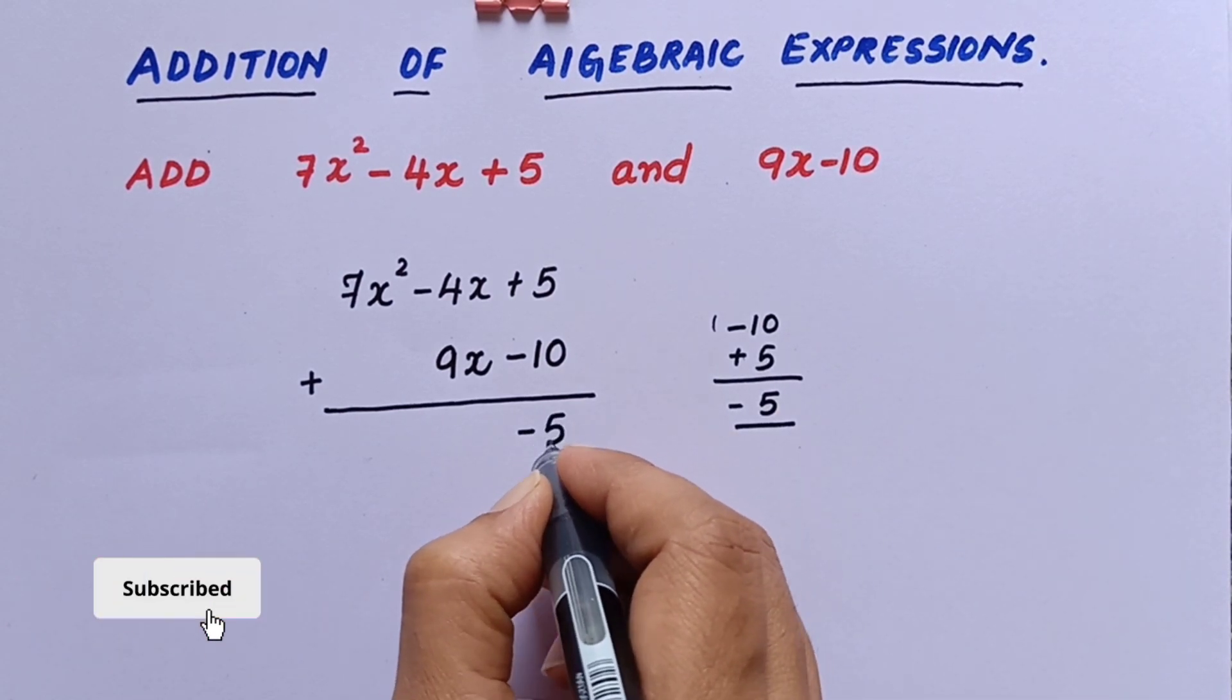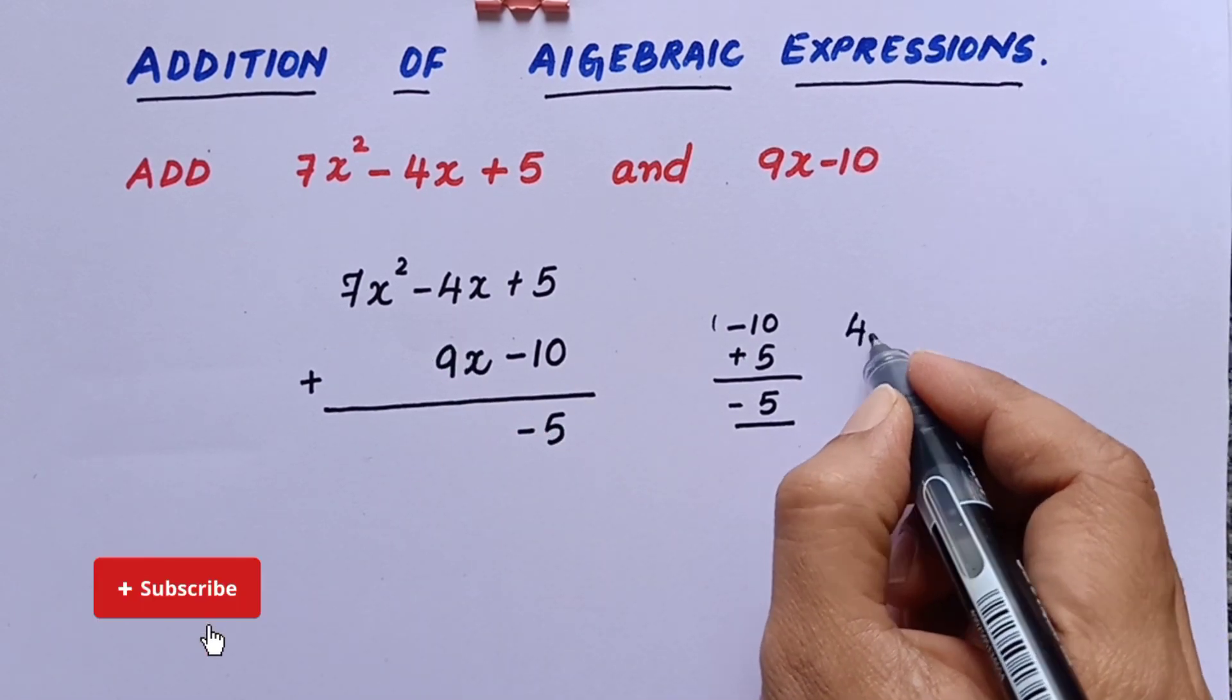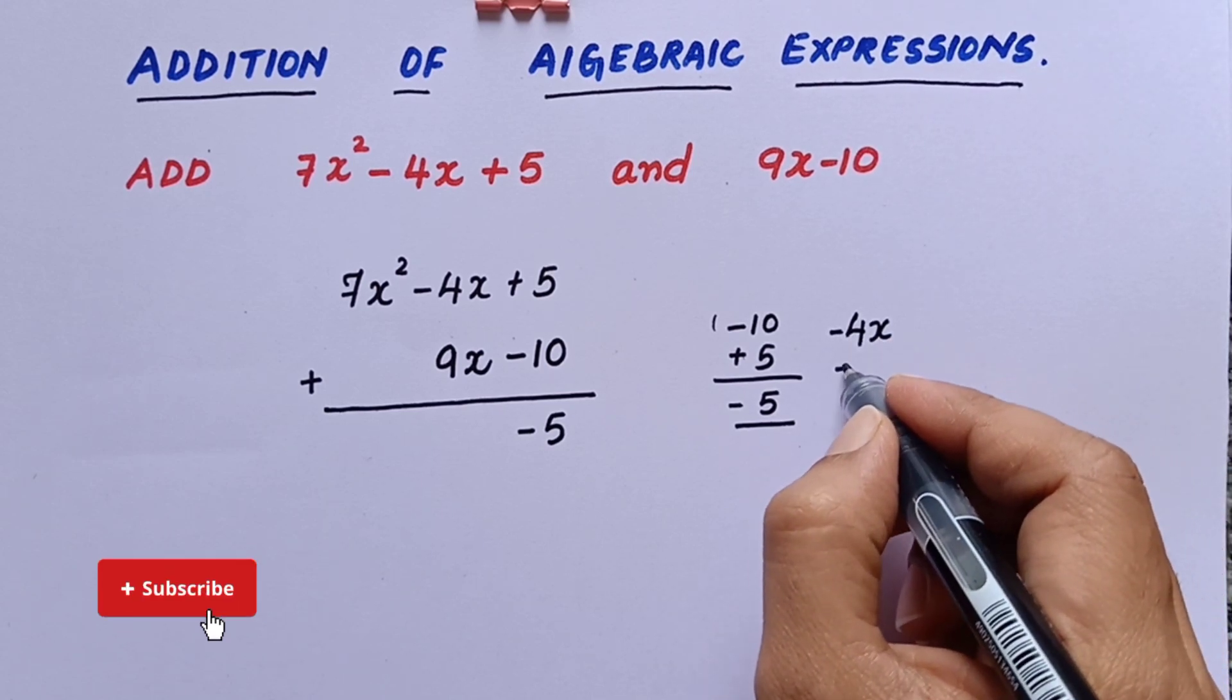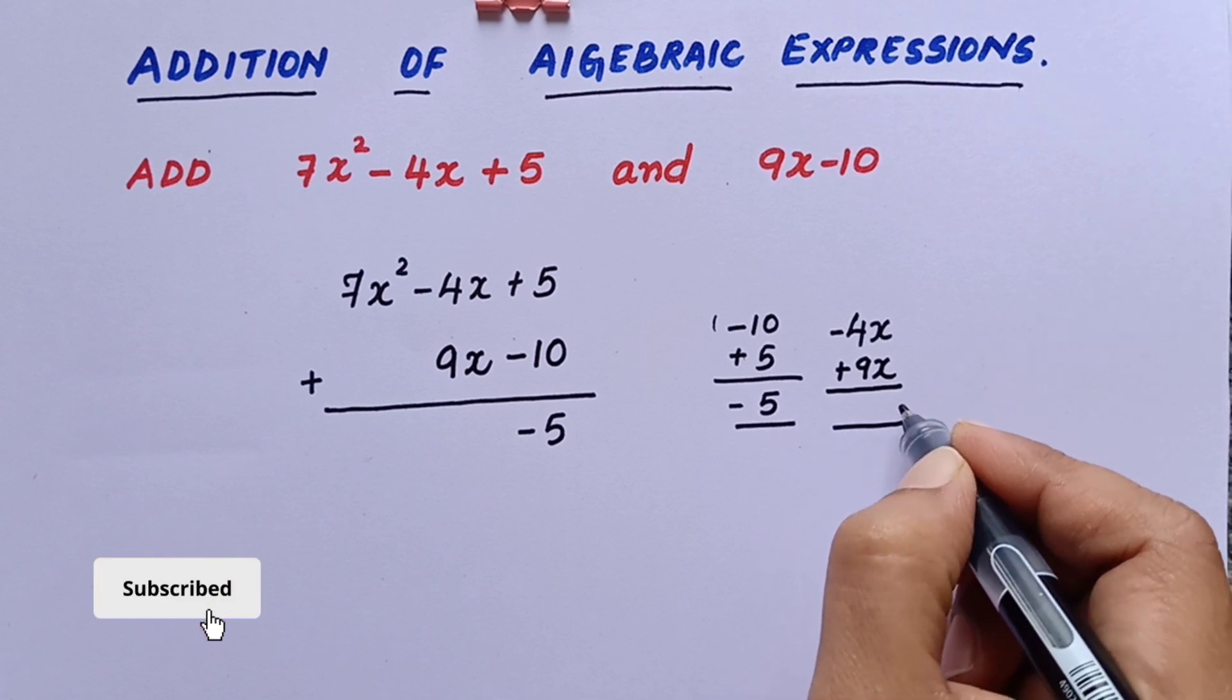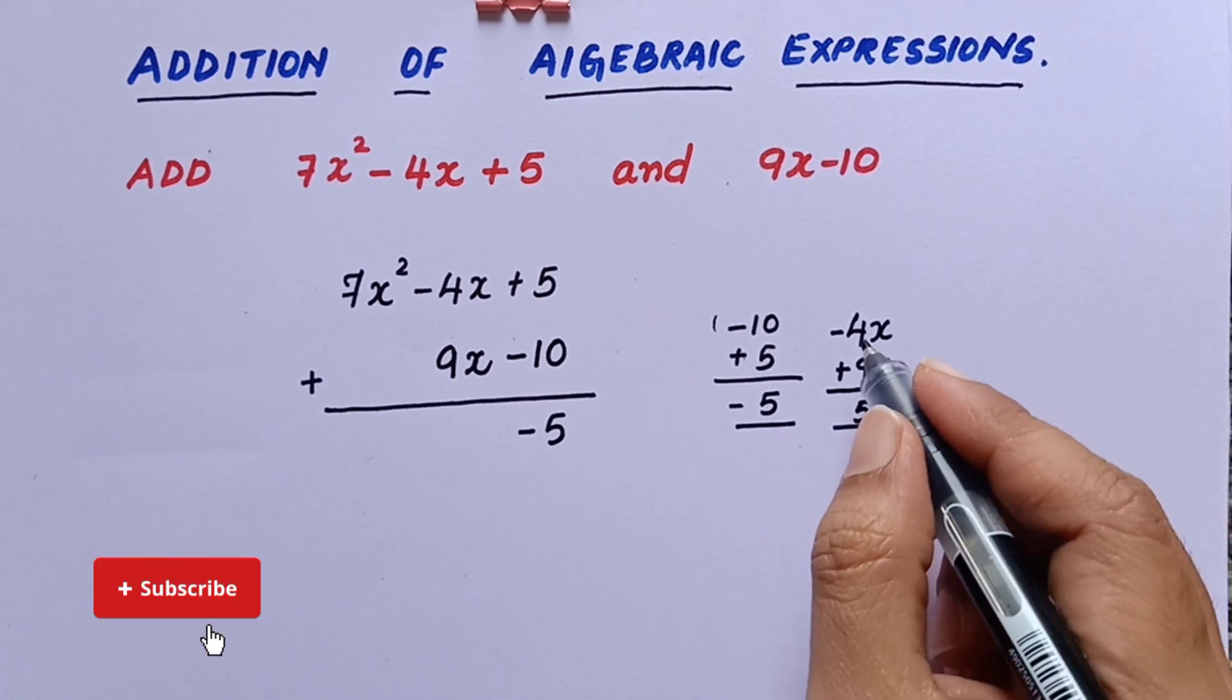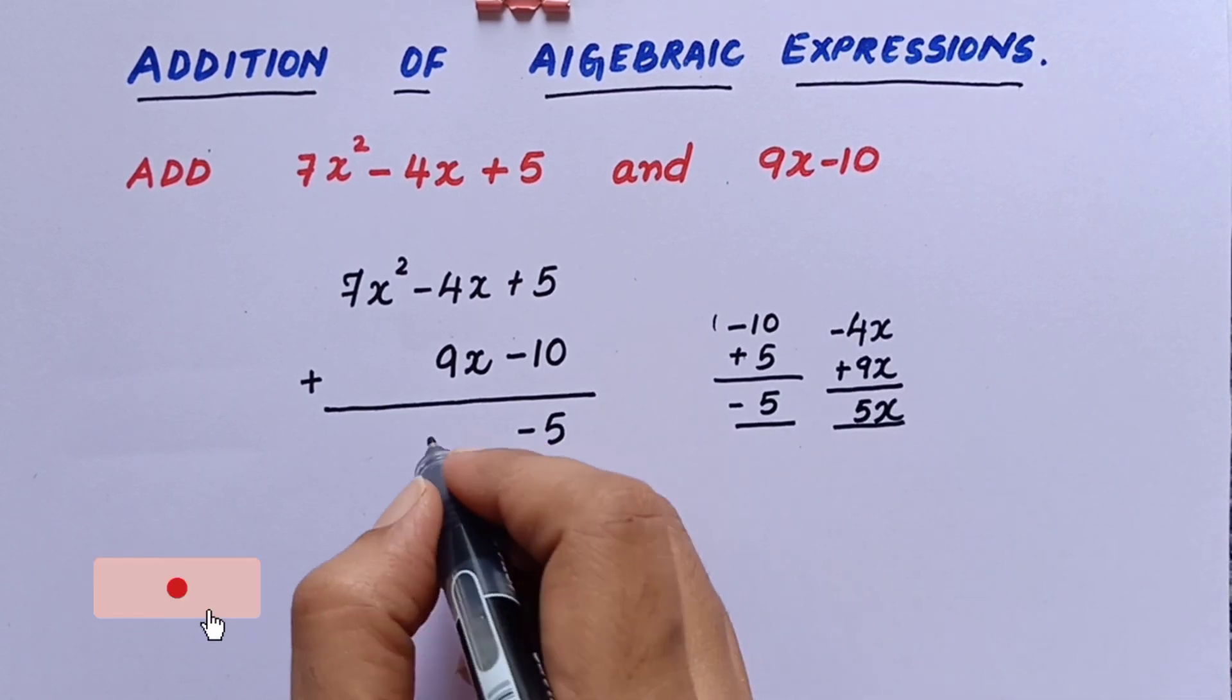So we'll have to write -5 and then we'll have to add -4x + 9x. We can add or subtract the like terms here. So we get 9 - 4 is 5 and the greater number sign is plus here. So we'll have to write +5x.